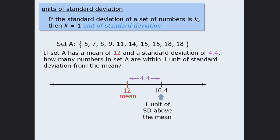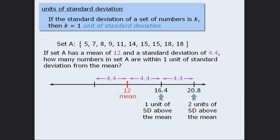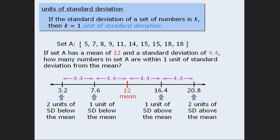Similarly, if we move another 4.4 units to the right, we can see that 20.8 is 2 units of standard deviation above the mean. Now if we move 4.4 units to the left of the mean, we get 7.6, and we can say that 7.6 is 1 unit of standard deviation below the mean. Similarly, if we move another 4.4 units to the left, we can see that 3.2 is 2 units of standard deviation below the mean.